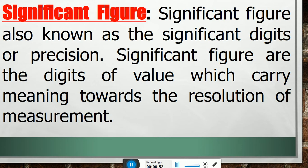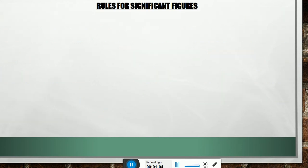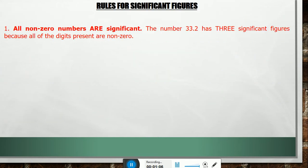The definition will be more clear in the next slide in which rules of the significant figure have this effect. First we know the significant figure in number. Rule 1: All non-zero numbers are significant. The number 33.2 has three significant figures because all of the digits present are non-zero.